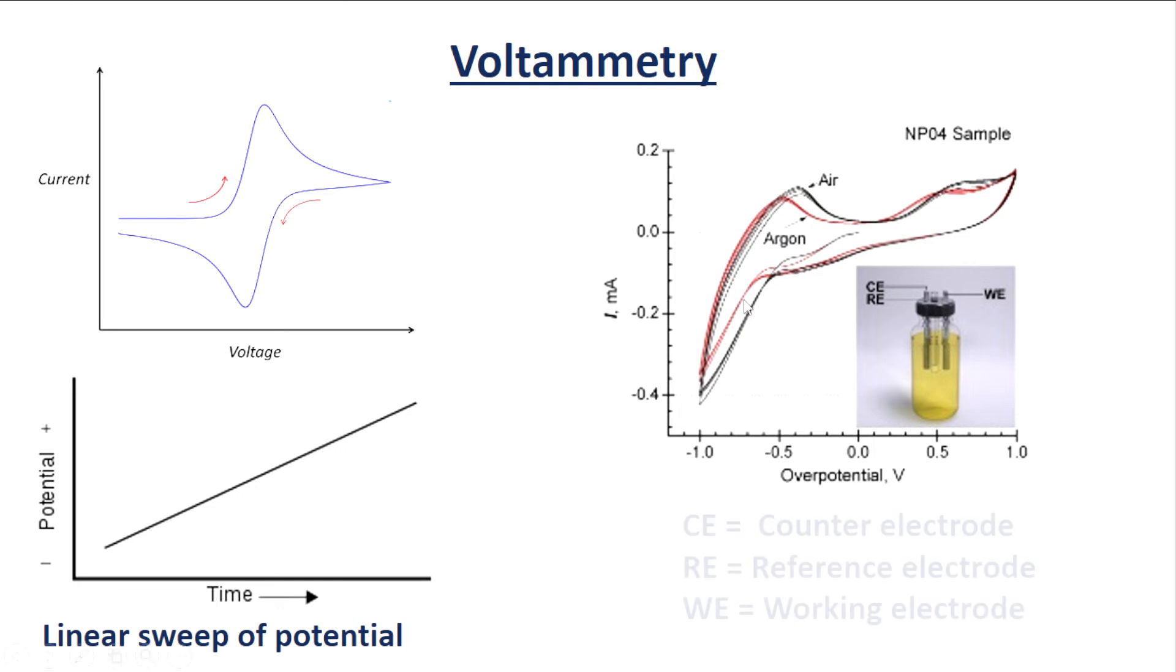Here is one setup for recording the voltammogram: CE means counter electrode, RE means reference electrode, and WE means working electrode. This is the linear sweep of the potential. As time progresses, there is a linear sweep from minus potential to plus potential.